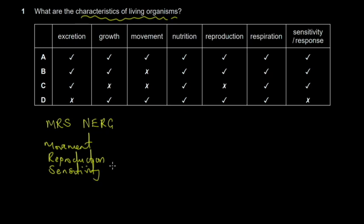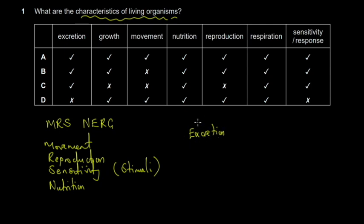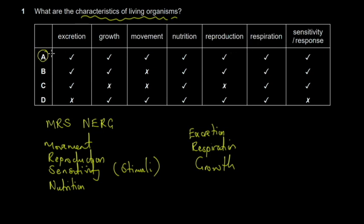S stands for sensitivity — any living organism responds to changes in the environment, which are called stimuli (singular: stimulus). N stands for nutrition — any living thing has to feed. E means excretion — any living thing has to get rid of toxic waste from its body. R is respiration, which can be aerobic or anaerobic depending on the organism. G means growth.